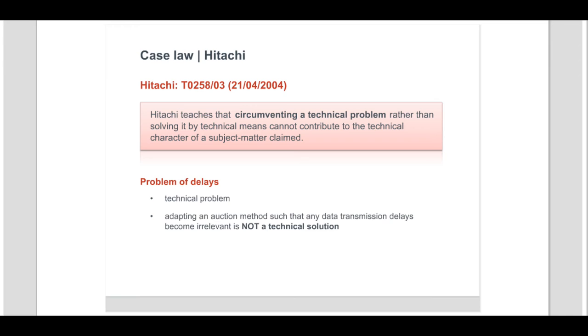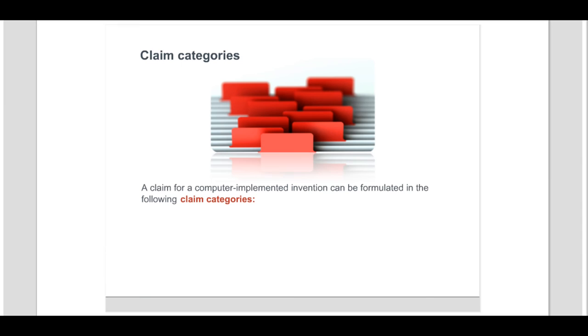We will now see the allowable categories of a claim for a computer-implemented invention. A claim for a computer-implemented invention can be formulated in the following claim categories: method claims — for example, a method of operating a data processing system; apparatus or system claims — for example, a system for data processing; computer program and storage medium, data carrier with computer program claims; signal claims; and data structure claims.